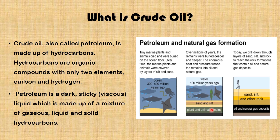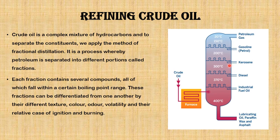The animal and plant remains are buried under sand and silt. Today we drill down through the layers of sand, silt, and rock to reach the rock formations that contain oil and gas deposits. Petroleum available on land is called onshore deposits, while those under a deep water body, especially the ocean, are called offshore deposits.